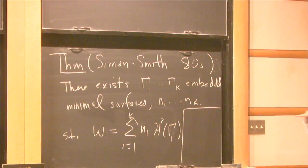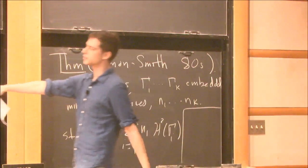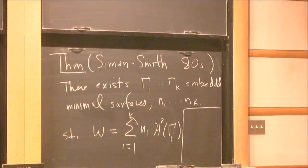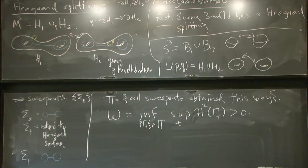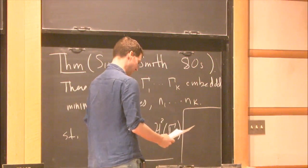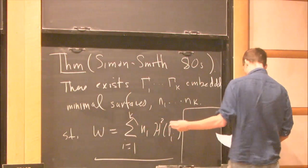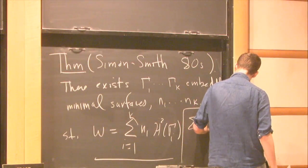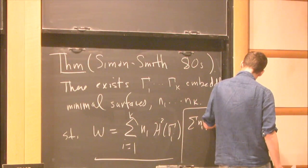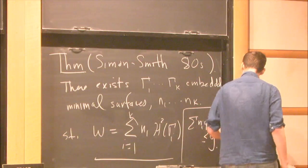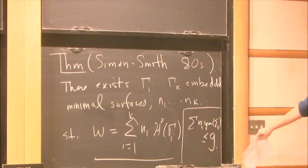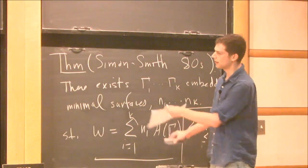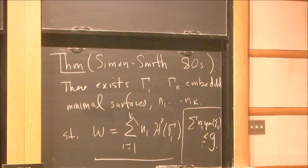So this width W is a critical value of the area functional, and there's some minimal surface — possibly weighted by integers — that realizes it. Also the genus can be controlled from above in terms of the genus of the initial Heegaard splitting; that's something I proved in my thesis.